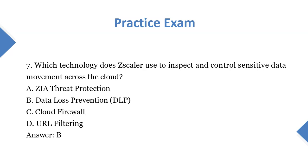Question 7: Which technology does Scalar use to inspect and control sensitive data movement across the cloud? A. ZIA Threat Protection. B. Data Loss Prevention (DLP). C. Cloud Firewall. D. URL Filtering. Answer: B.